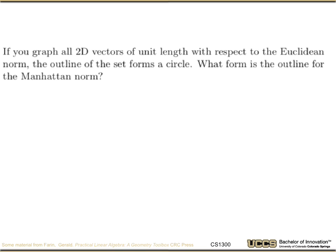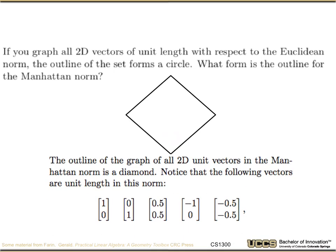If you didn't have to look that up, good. For Manhattan norm, they form a diamond because we're looking at all the things that add up to 1 in absolute value.